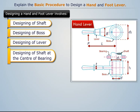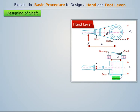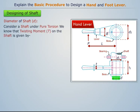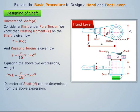Let's first understand the procedure to design a hand lever, starting with the designing of shaft. For this, we need to determine its diameter. Consider a shaft under pure torsion. We know that the twisting moment on the shaft is given by a known expression, and the resisting torque is given by another expression. Equating the above two expressions, the diameter of the shaft can be determined.